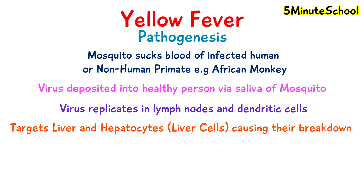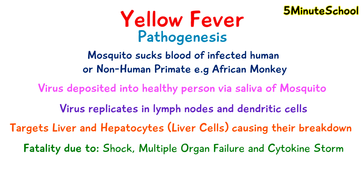If the virus and the virus particles tend to override the body's immune system, we start to see fatalities occurring due to shock and multiple organ failure. We also see something called a cytokine storm, which is where the body starts to attack its own cells instead of attacking the virus.